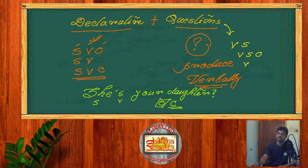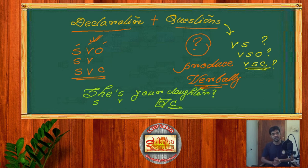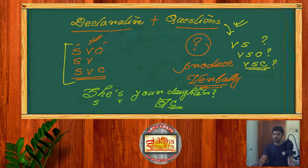Now the problem is: when we have learned about questions, we have learned the structure as V-S, or V-S-O, or V-S-C. An interrogative sentence follows the structure: verb then subject, or verb then subject then object, or verb then subject then complement. This structure is normally followed. But here we aren't following that — we are following S-V-O instead, and the result is a question. There lies the confusion. So far, you have already learned that it's actually a question, but the structure of a declarative sentence is maintained, and thus we produce a declarative question.